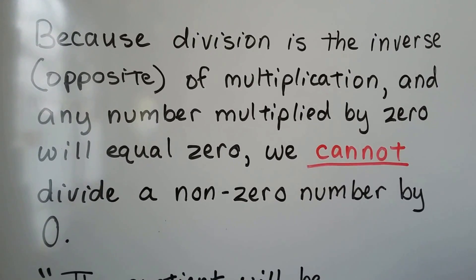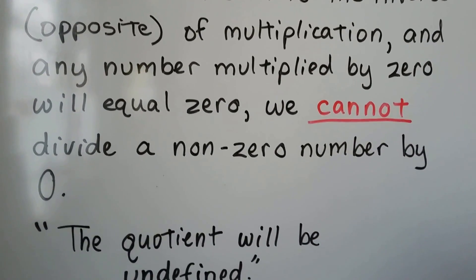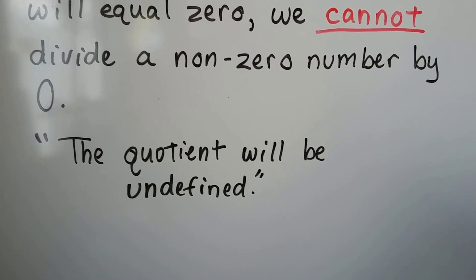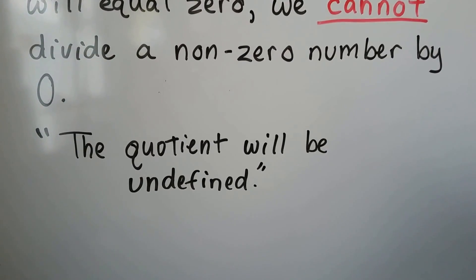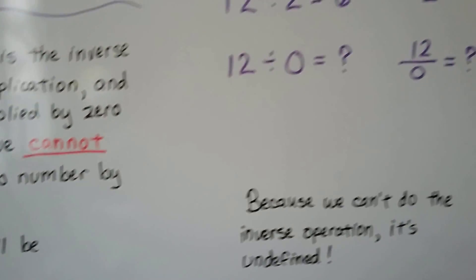Because division is the inverse opposite of multiplication, and any number multiplied by 0 will equal 0, we cannot divide a non-zero number by 0. The quotient will be undefined. So if you ever see something that says it's undefined, now you're going to know why.